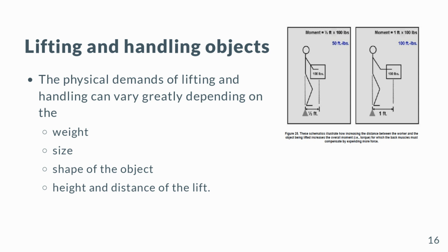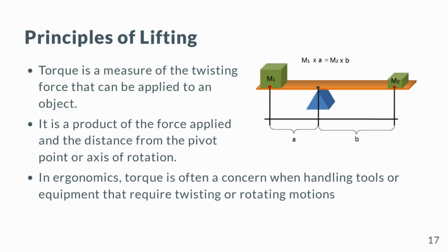Body posture during the lift can also affect the physical demands of lifting; bending, twisting, or reaching can increase the physical effort required to lift the object. Frequency of lifts can also affect physical demands; lifting heavy objects repeatedly over a short period of time can be more physically demanding than lifting the same object less frequently. Torque is a measure of the twisting force that can be applied to an object; it is a product of the force applied and the distance from the pivot point or axis of rotation. In ergonomics, torque is often a concern when handling tools or equipment that require twisting or rotating motions.